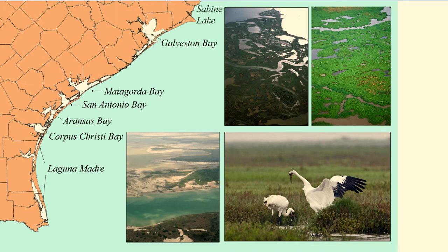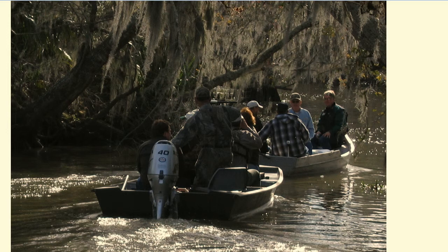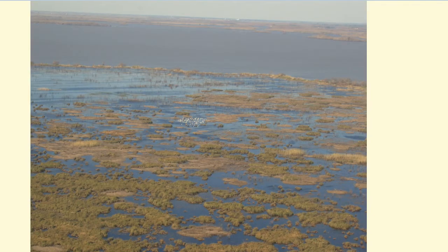The coast from Sabine Lake on the border between Texas and Louisiana to Galveston Bay is characterized by extensive wide wetlands that go from freshwater to brackish to saltwater as you move closer to the Gulf.